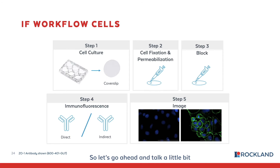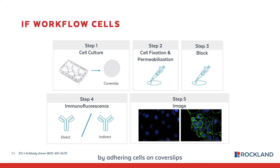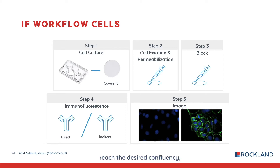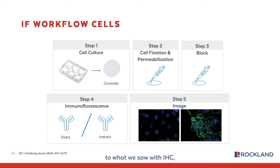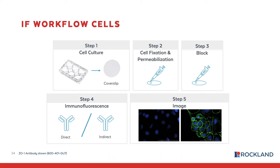We begin the cell workflow by adhering cells on coverslips in a multi-well dish — for example, a six-well culture dish. Once the cells reach the desired confluency, they are washed, then fixed and permeabilized. Fixation, similar to what we saw in IHC, preserves the morphology and can be done with various fixatives. The most popular are 100% cold methanol or paraformaldehyde, and the choice depends on the antigen of interest and localization.